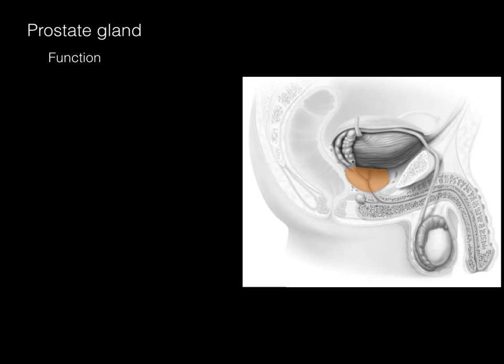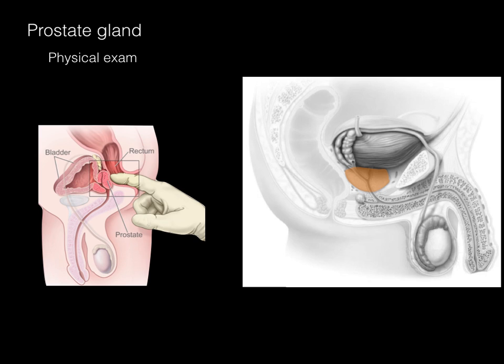The prostate also secretes a prostate-specific antigen known as PSA into the blood — especially if there are benign or malignant cancerous components to the prostate. Measuring PSA levels is used to diagnose and monitor prostate cancer. It is also assessed via digital rectal exam — notice how close the prostate gland is to the rectum. By inserting a finger into the anus and rectum, a physician or PA can touch the back of the prostate gland and feel if it is enlarged or protruding into the rectum.